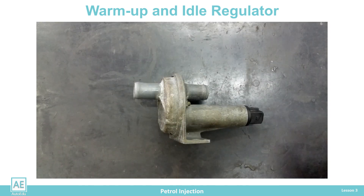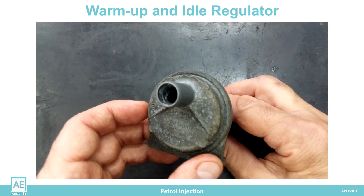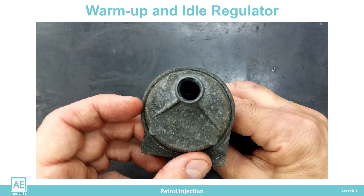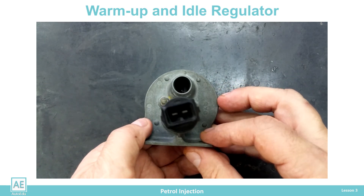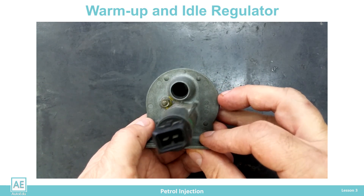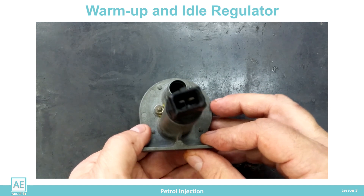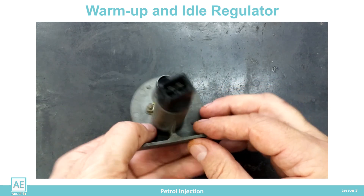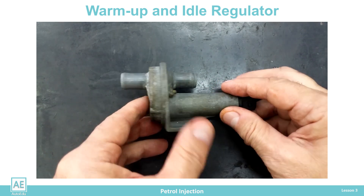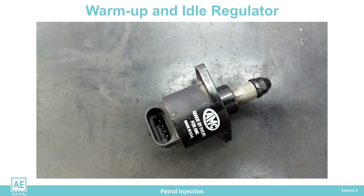With the development of electronic engine control, the regulator with bimetal could not meet the needs of more precise heating regulation. There was a new need to regulate the speed when the engine is warmed up.